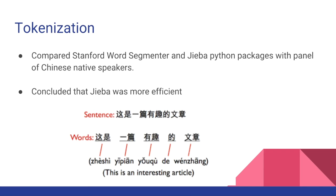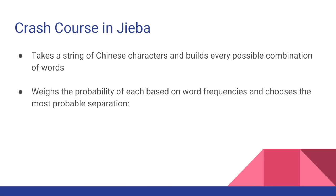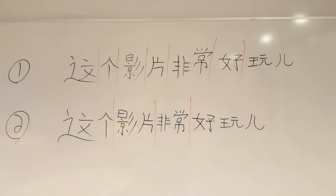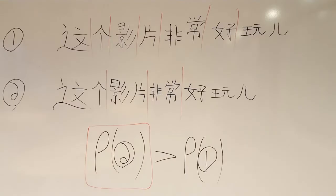The two most popular ones I tried were the Stanford word segmenter and jieba. After asking some of my Chinese friends to check out the results, I decided to go with the latter package. Jieba takes a string of Chinese characters and breaks it into every possible combination of words, then weighs the probability of every option and chooses the most probable. For example, here we have two poorly written sentences separated such that both contain completely legitimate words, but based on word frequency lists, it's more likely to have the second option — so jieba chooses that one. This is also a kind of bag-of-words approach to tokenization.